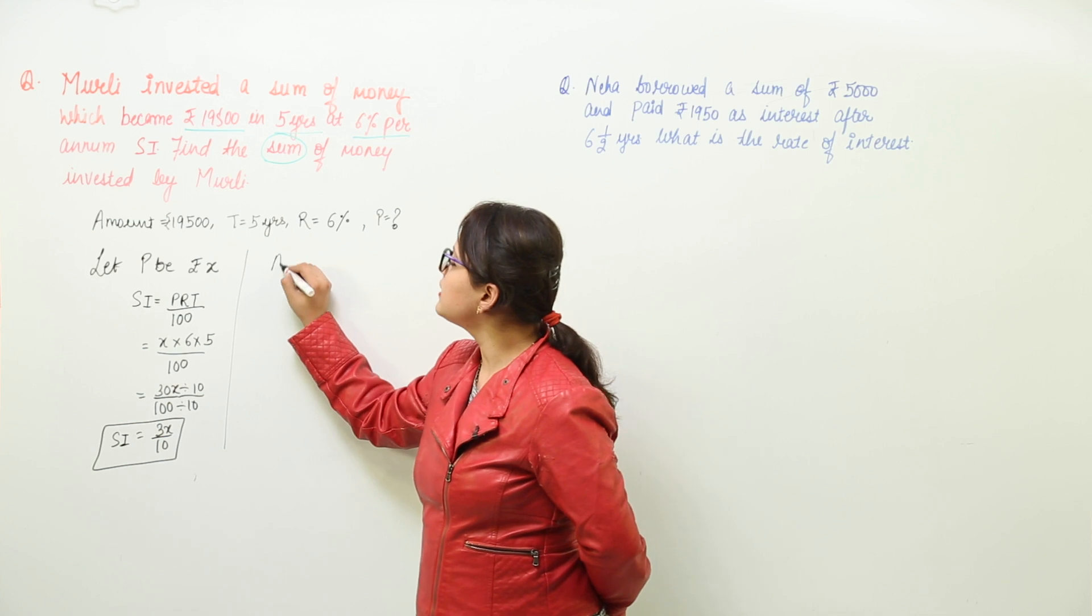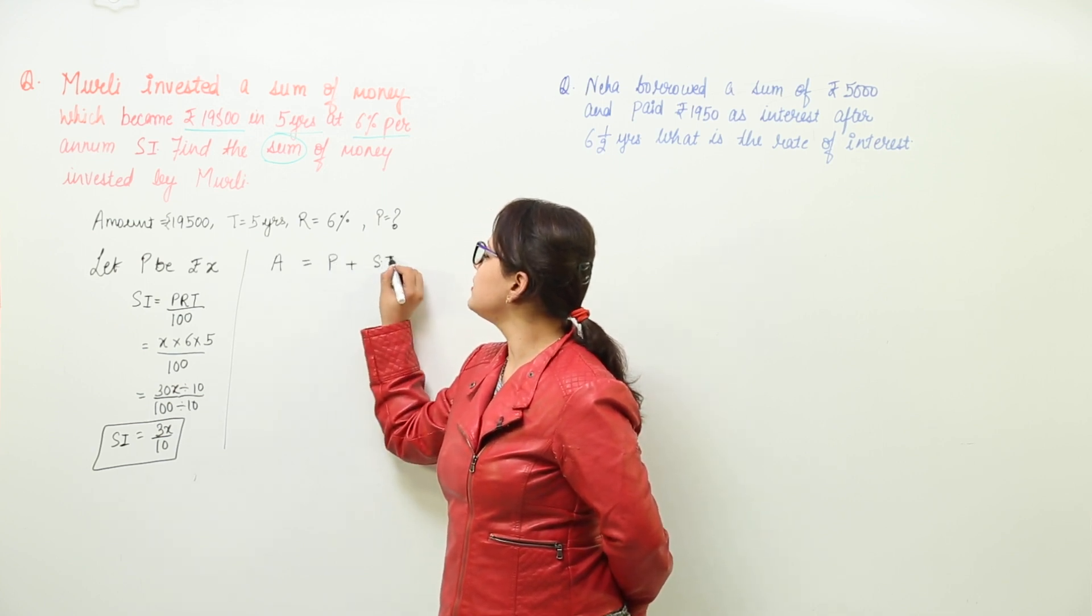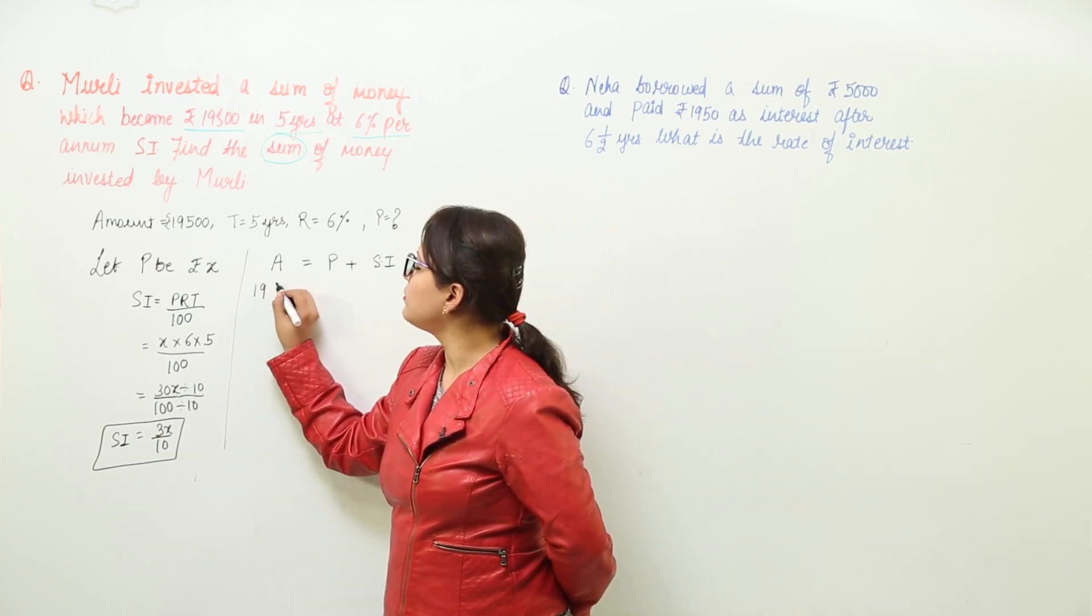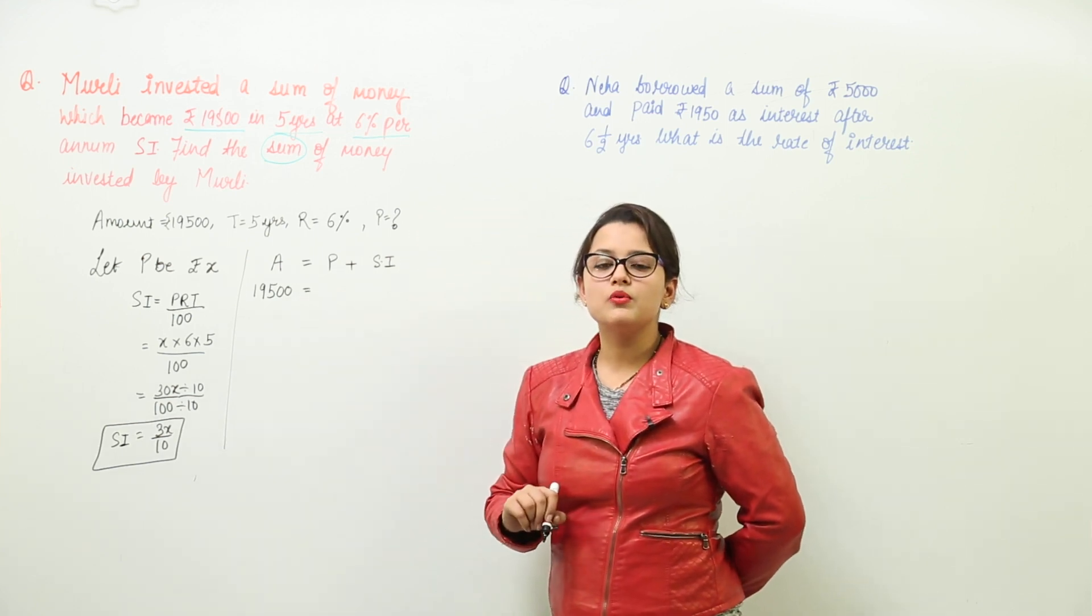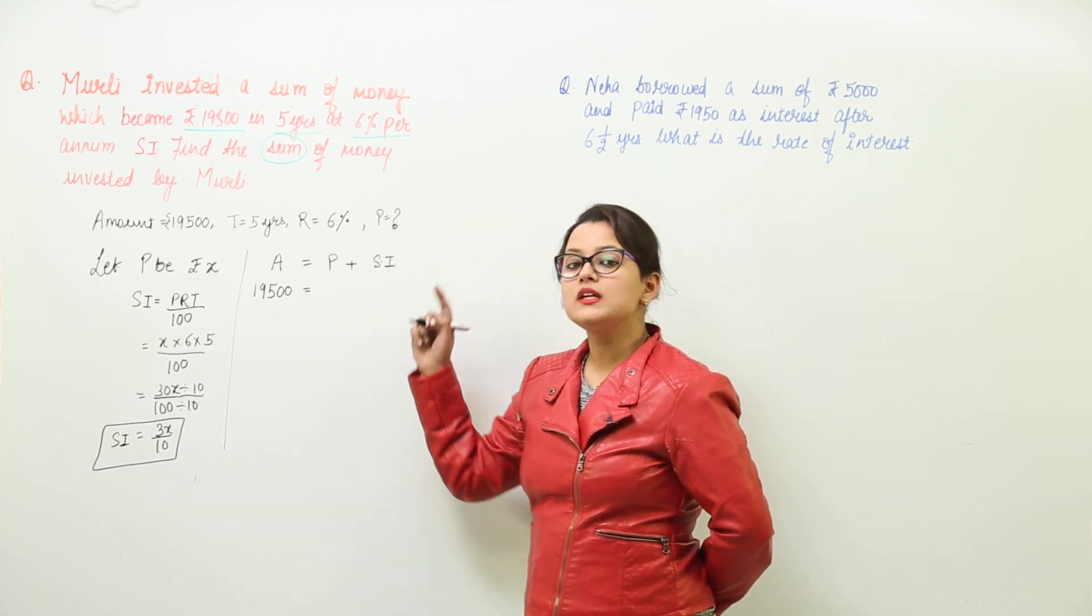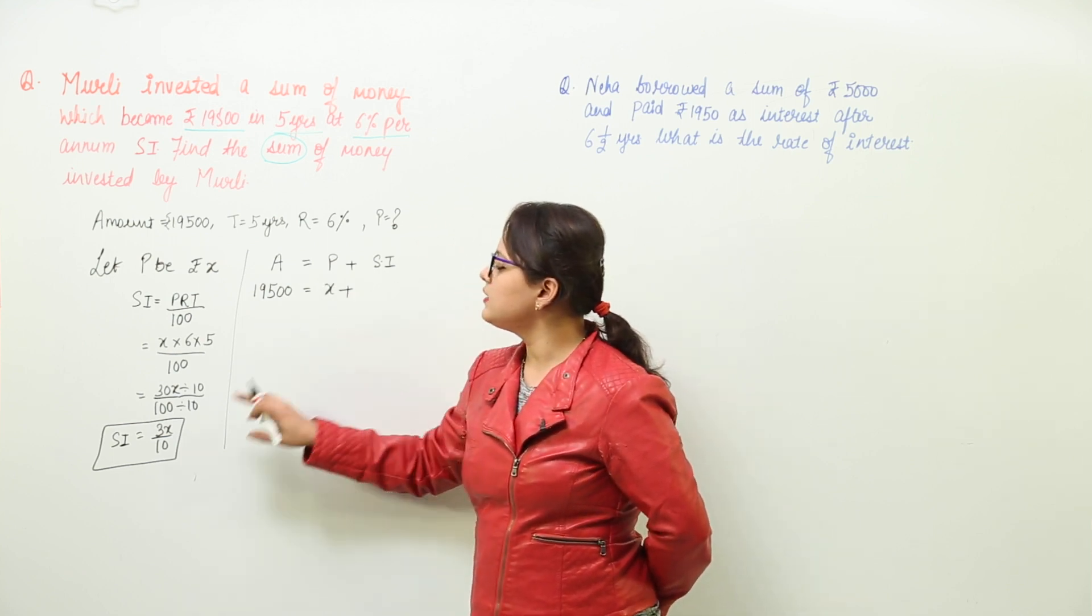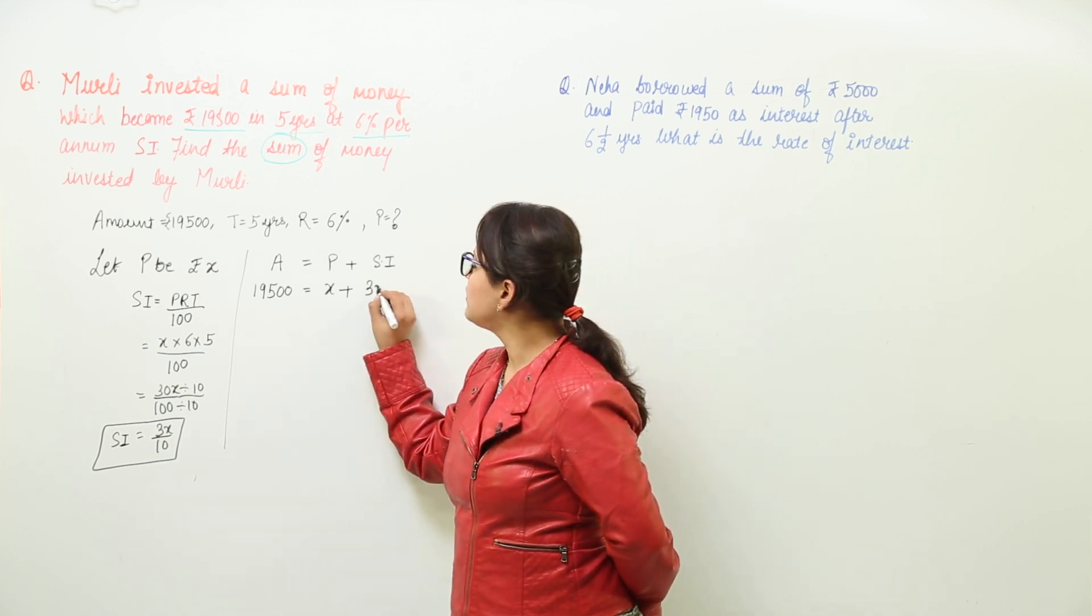How come? We know that the amount is always equal to principal plus simple interest. So what we can do? We will place the value for amount that is 19,500. We will place the value of P that we had assumed which was x plus the calculated value of simple interest which was 3x over 10. So we will write it over here.